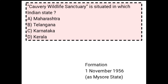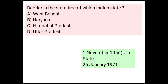The state tree of which Indian state? The answer is Himachal Pradesh. Himachal Pradesh was a Union Territory from 1st November 1956, and became a full state on 25th January 1971.